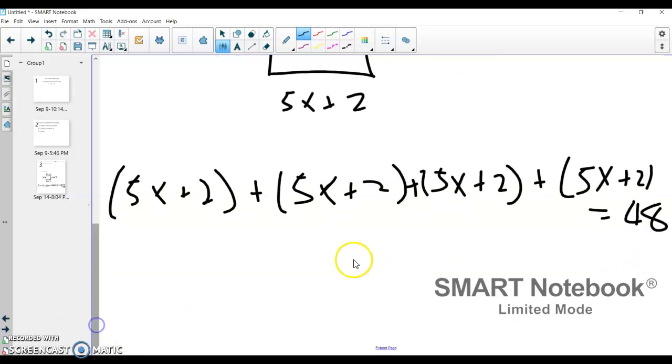Now we have this long chain of addition, so what we're going to do is we're going to add all the 5x's together. So 5x plus 5x is 10x, 10x plus 5x is 15x, 15x plus 5x is going to be 20x, and then 2 plus 2 plus 2 plus 2 is going to give us 8, and that's all equal to 48 now.